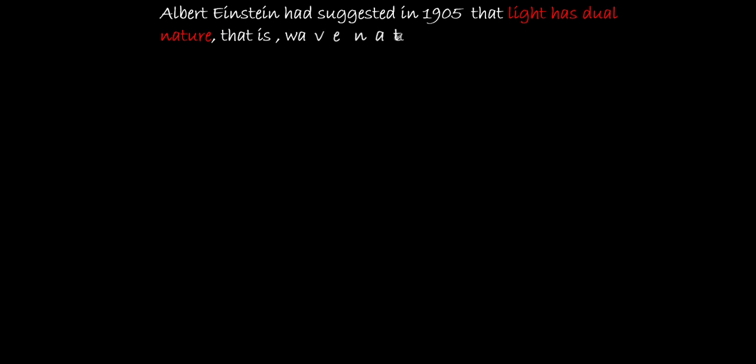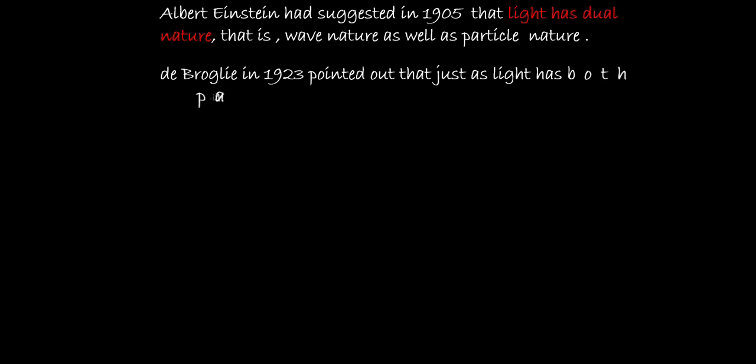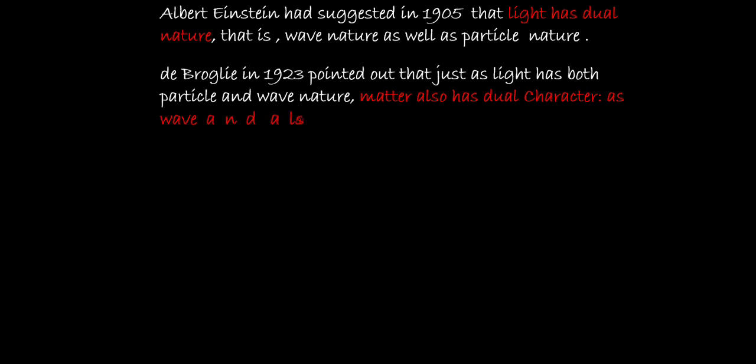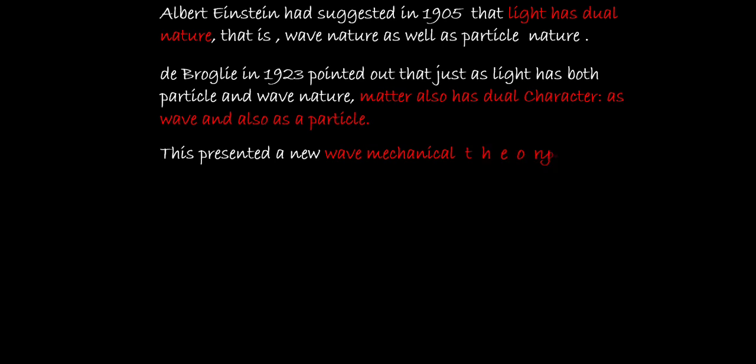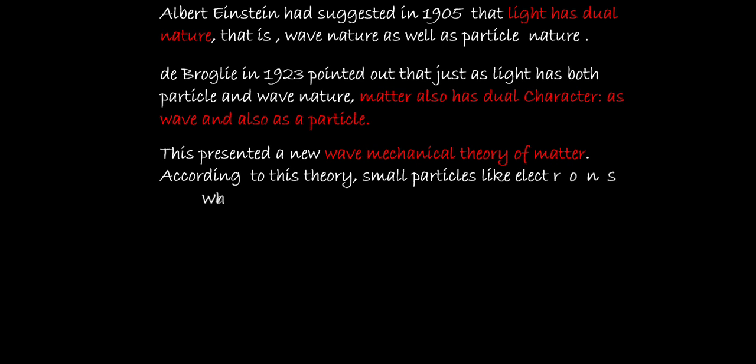Albert Einstein had suggested in 1905 that light has dual nature, that is wave nature as well as particle nature. De Broglie in 1923 pointed out that just as light has both particle as well as wave nature, matter also has dual character — as a wave and also as a particle. This presented a new wave mechanical theory of matter.